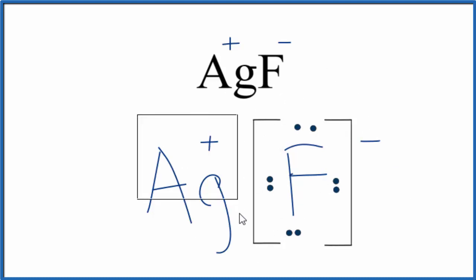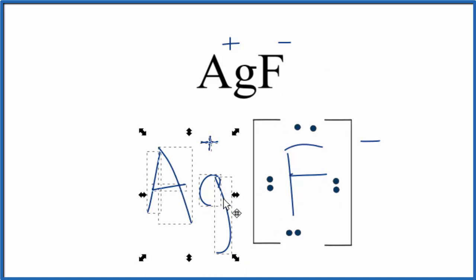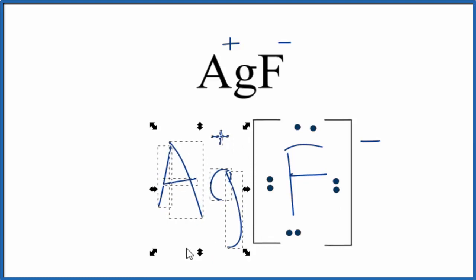Since we have this positively charged particle next to this negative particle, they're attracted to each other. And that's what forms that ionic bond.